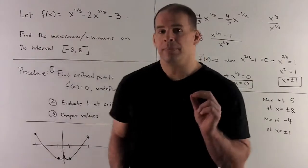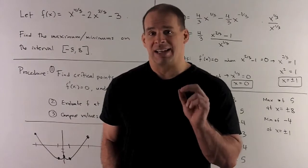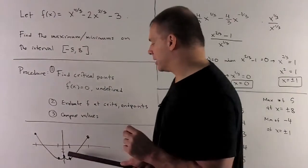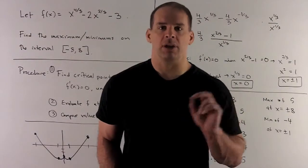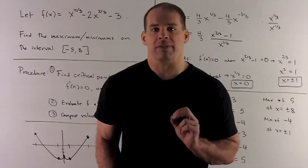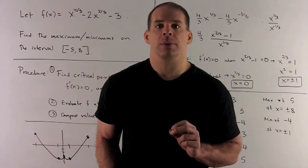Also note, the derivative there does not exist. That's because if you take a look at this, it's got a little spike there or a vertical tangent line happening. Either way you look at that, you're not going to get a derivative at x = 0.